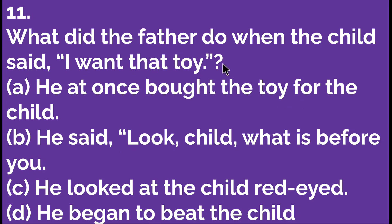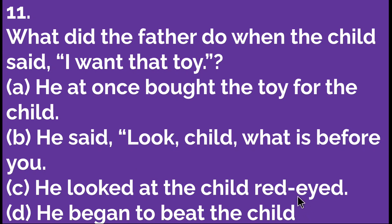What did the father do when the child said, 'I want that toy'? Option A: he at once bought the toy for the child. Option B: he said, 'Look child, what is before you?' Option C: he looked at the child red-eyed. Option D: he began to beat the child. C is the right option — he looked at the child red-eyed. So let's move to the next question.